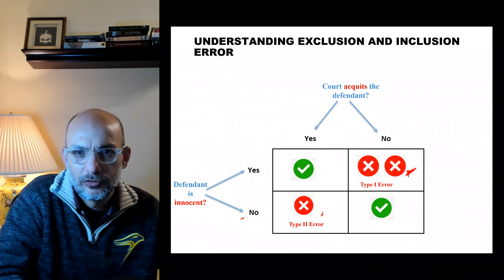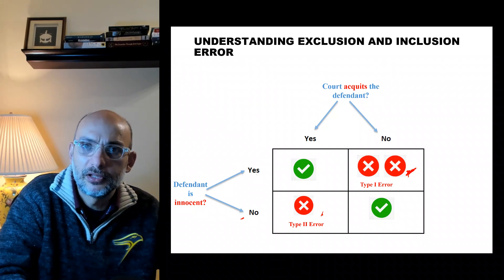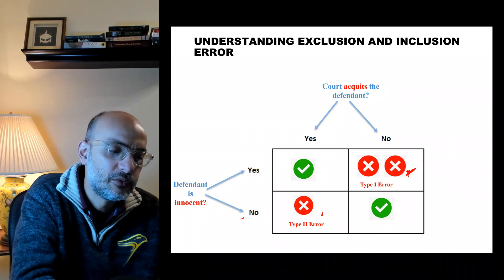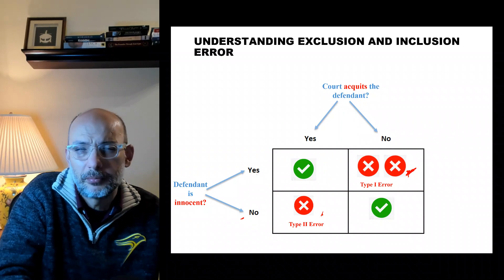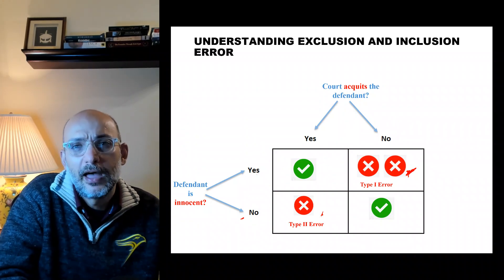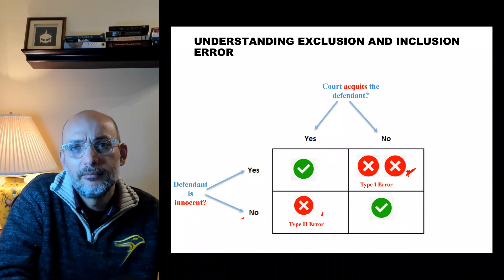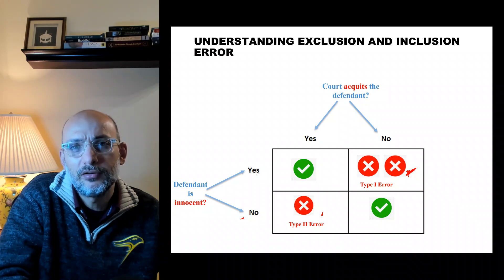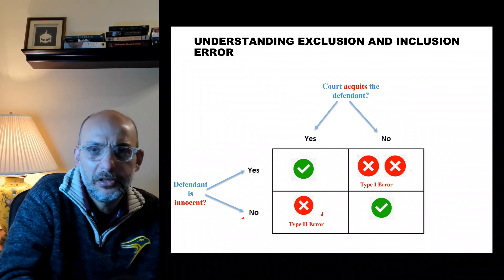Carrying this discussion to statistics: they assign what's called Type 1 error and Type 2 error. Type 1 error is the worst error. In a biological field, for example, you need to control Type 1 error — not accepting a medication or vaccine unless the margin of error is minimized. That is the margin of error you want to minimize.